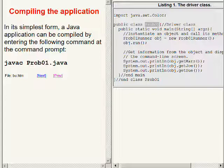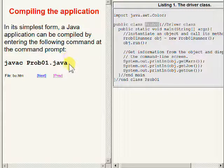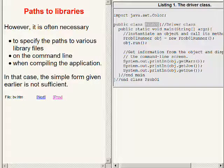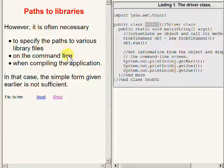Before we dig deeper into the driver class for this program, let's take up the topic of how one goes about compiling a Java application. In its simplest form, a Java application can be compiled by entering the command shown at the command prompt. However, life is often somewhat more complicated. It is often necessary to specify the paths to various library files on the command line when compiling the application, in which case the simple form is not sufficient.